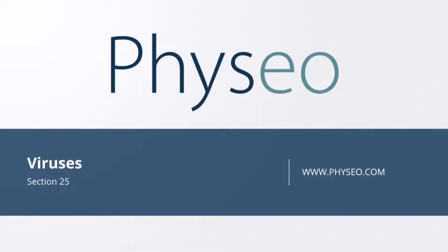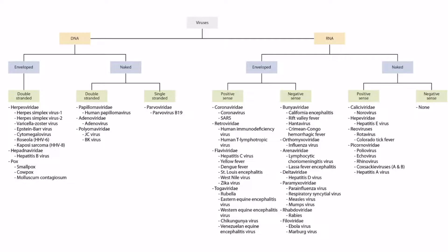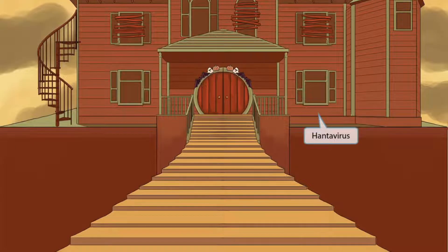Welcome to Section 25 of Viruses. This is our virus overview figure, and in this video we'll be discussing Hantavirus, which you can see right here. This scene will take place just outside of a haunted house. Haunted house sounds like Hantavirus, which will be our symbol for this virus.